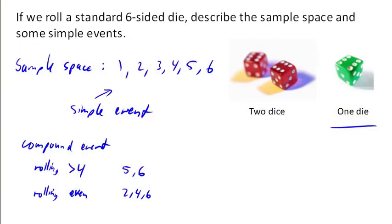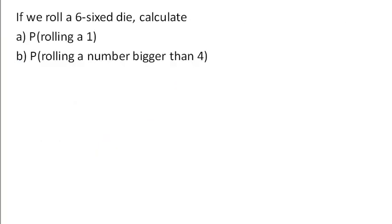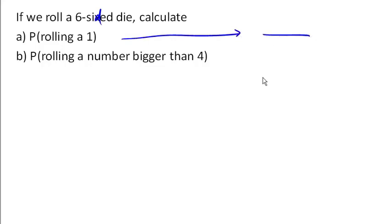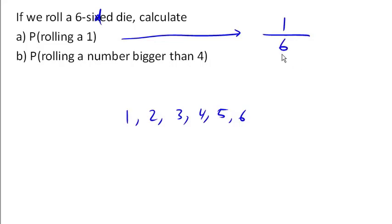Now we can start talking about probability. If we're rolling one of those six-sided dice, we can calculate the probability of rolling a 1 — written as P(1). A basic probability is computed as the number of ways that this event can occur divided by the total number of possible events. How many ways can we roll a 1? Only one of them. How many total simple events are there? Six. So there is a one-sixth probability of rolling a 1 on the die.